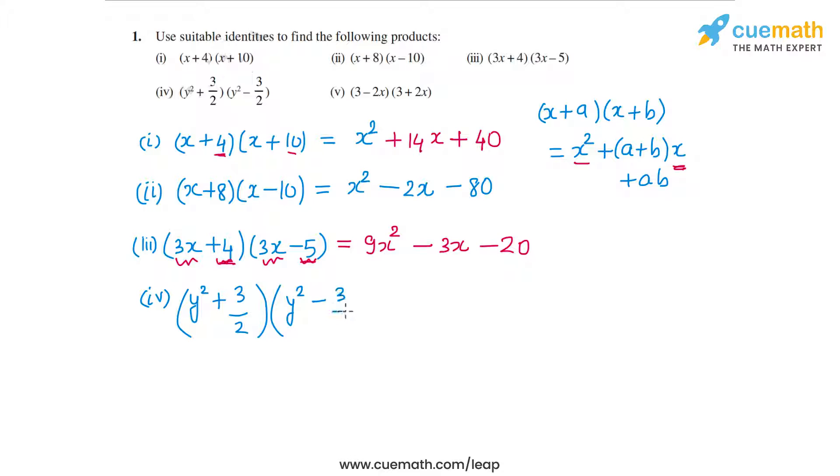Now this is of the form (x + a)(x - a), or (x + y)(x - y), and that leads to a difference of two squares. So the identity I'm going to use in this case is (x + y)(x - y) = x² - y², the difference of the squares.